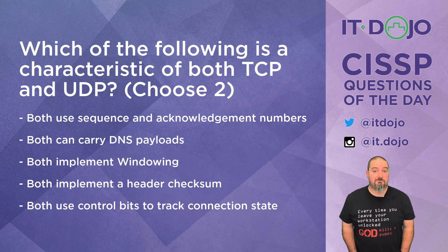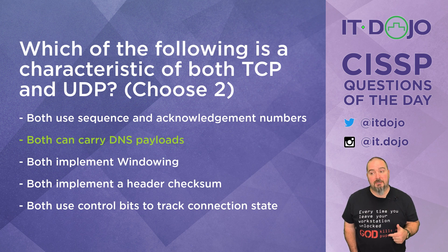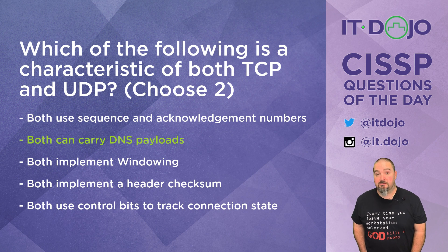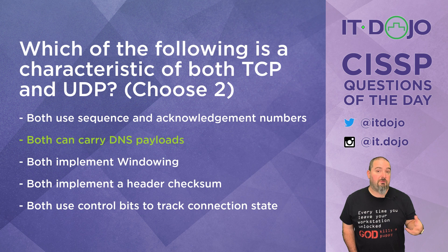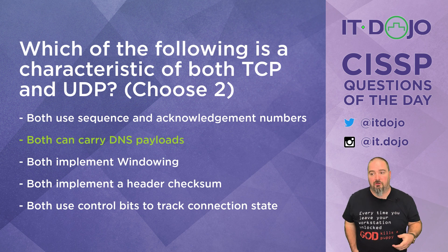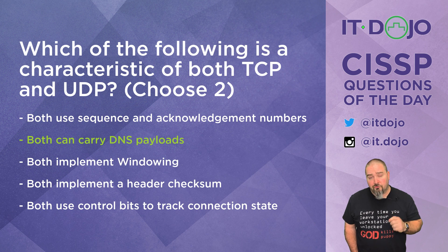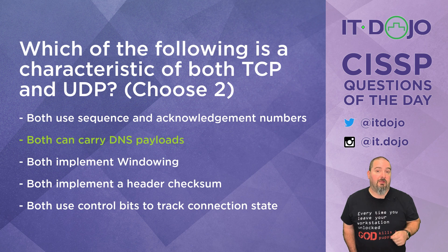Choice number two says that both TCP and UDP can carry DNS payloads, and that is actually true. More often than not, people associate DNS as being a UDP-based protocol, but DNS can also be TCP-based. Most day-to-day name resolution — resolving www.whatever.com to an IP address, finding mail server names, finding DNS server names, or getting a DKIM record for sending digitally signed mail — those are all done via UDP. Zone transfers, however, which are transfers of zone file information between DNS servers, are done using TCP.